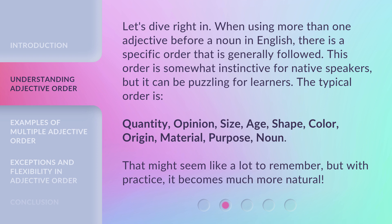Let's dive right in. When using more than one adjective before a noun in English, there is a specific order that is generally followed. This order is somewhat instinctive for native speakers, but it can be puzzling for learners.